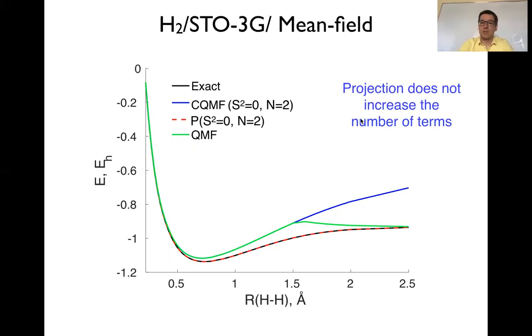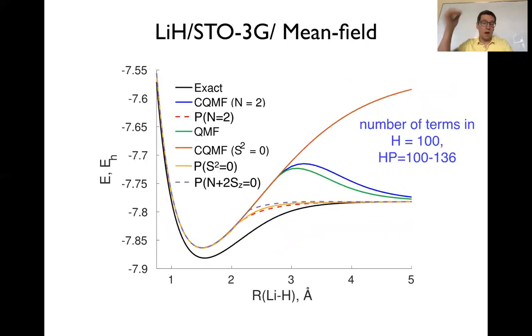Now, this is a very simple system. The projection doesn't increase the number of terms in the Hamiltonian because here we have only two qubits and the number of terms in the Hamiltonian already large, so that projection doesn't really create any new terms because it's just a two qubit system and polynomial growth in the Hamiltonian, same as exponential growth after a projector.